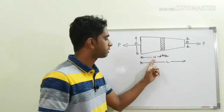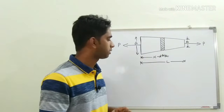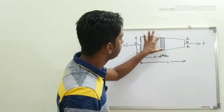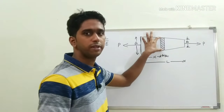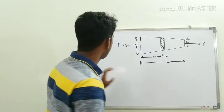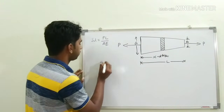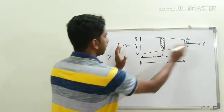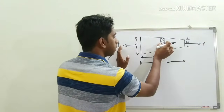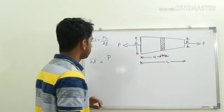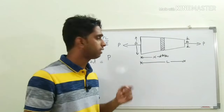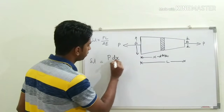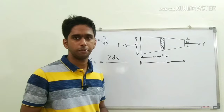Area is a function of x, meaning area keeps on varying with respect to x. We are going to apply the deformation equation PL/AE for the differential element. The deformation of the differential element delta L equals P — the load on the differential element is also P — and the length of the differential element is only dx.